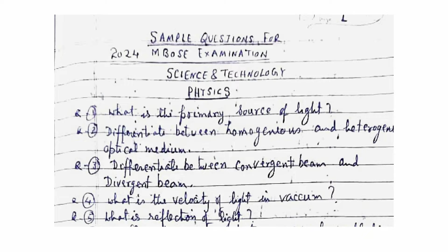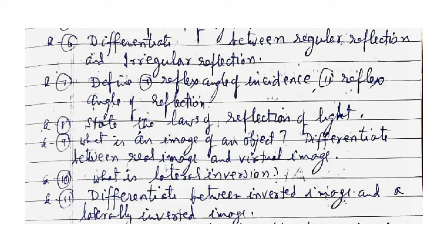What is the primary source of light? Differentiate between homogeneous and heterogeneous optical medium. Differentiate between convergent beam and divergent beam of light. What is the velocity of light in vacuum? What is the reflection of light? Differentiate between regular reflection and irregular reflection. Define the angle of incidence and angle of reflection.